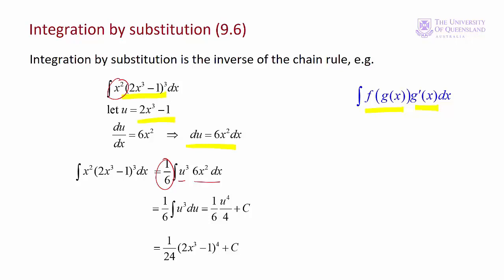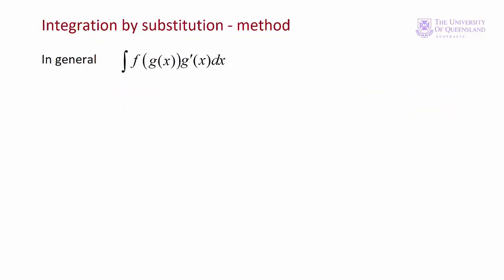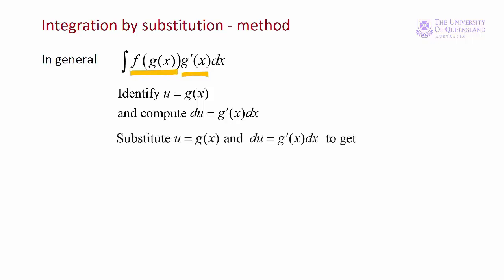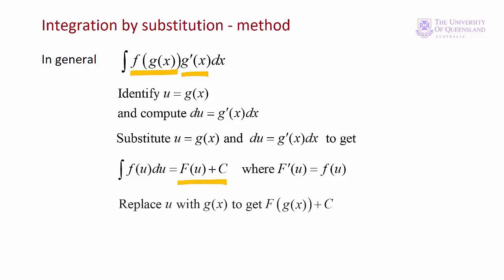Let's set out that method in a little more detail. First we identify the integrand as being suitable for integration by substitution — it is a product where one term is a compound function and the other term is the first derivative of the inner function, or something close to it. Having established that, we identify the inner function g(x) and let it equal u, then compute du equals g′(x) dx. We substitute u for g(x) and du for g′(x) dx to get our simplified integration, apply the rules of integration to get the answer in terms of u, and finally replace u with g(x) to get the answer we want.